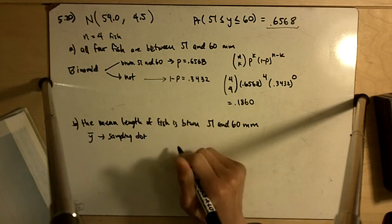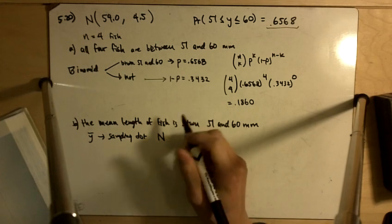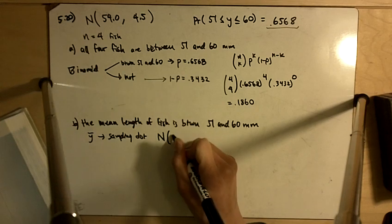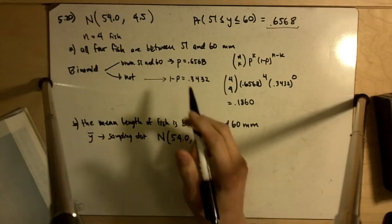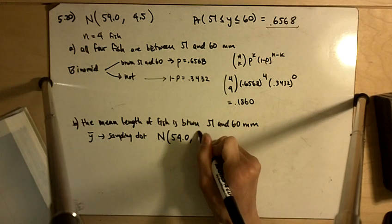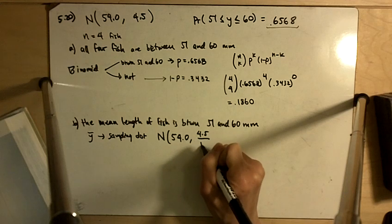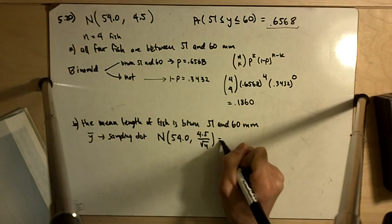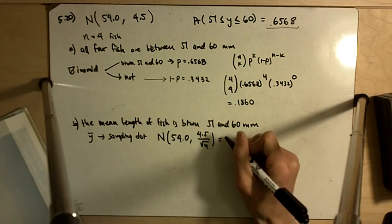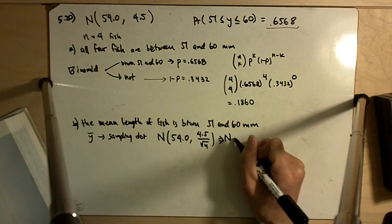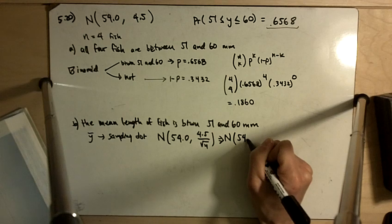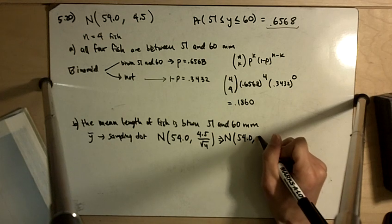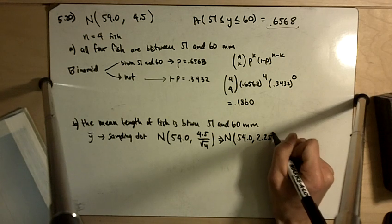And the sampling distribution is going to have a normal distribution with the same mean as the population, 54.0, but the standard deviation is going to be 4.5 divided by the square root of n, or in this case, square root of 4. And so here we've got a normal distribution of mean 54 and standard deviation 2.25.